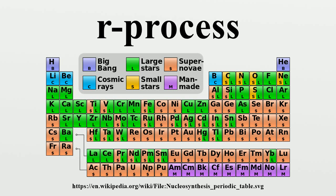The most probable candidate site for the R process has long been suggested to be core-collapsed supernovae, which may provide the necessary physical conditions for the R process. However, the abundance of R process nuclei requires that either only a small fraction of supernovae ejects R process nuclei to the interstellar medium, or that each supernova ejects only a very small amount of R process material. In addition, the ejected material must be relatively neutron-rich, a condition which has been difficult to achieve in models. An alternative site proposed in 1974 was decompressing neutron star matter ejected from neutron stars merging with black holes in compact binaries. In 1989, this scenario was extended to binary neutron star mergers. These sites may now be starting to be observationally confirmed.